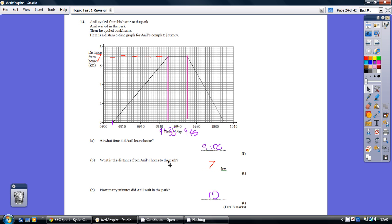What is the distance from Anil's home to the park? Well picture the journey. This is the cycling to the park. This is while we're at the park. And this is cycling home from the park. So while we're at the park here we're consistently 7 kilometres from home. Halfway between 6 and 8.